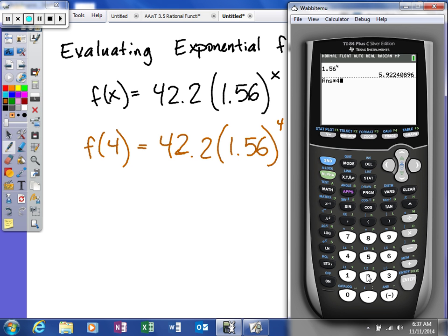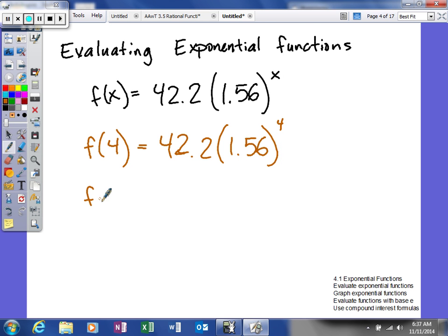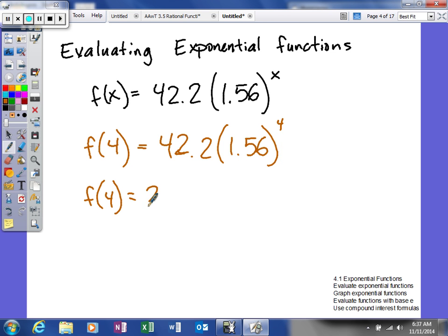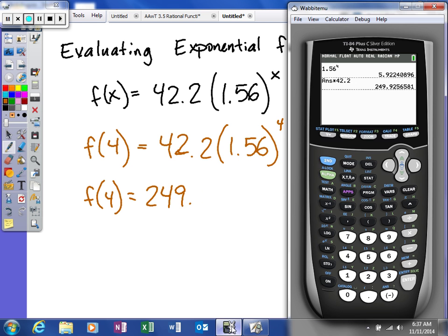And then what we're going to do is we're going to multiply that by 42.2. So you can see that we will get f of 4. Whoops, I lost my calculator. To be 249.9.